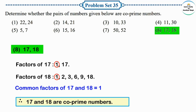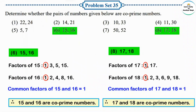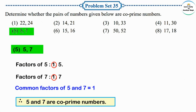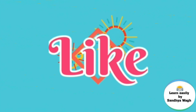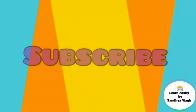Problem set 35 is now complete. One observation: two consecutive numbers are always co-prime numbers. Consecutive numbers means numbers that follow each other in order. For example, 15 and 16 are consecutive numbers, and 17 and 18 are consecutive numbers — and both pairs are co-prime numbers. That's all for today. We will meet again in our next video. Till then, keep learning, keep enjoying. Bye-bye.